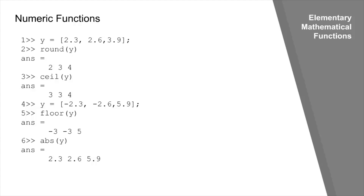Now let's tweak the numeric array to [-2.3, -2.6, 5.9] and use the floor function. The floor function rounds toward negative infinity: -2.3 becomes -3, -2.6 becomes -3, and 5.9 becomes 5, since 5 is closer to negative infinity than 6. The absolute function returns the magnitude, so -2.3 becomes 2.3, -2.6 becomes 2.6, and the positive value 5.9 is unaffected.